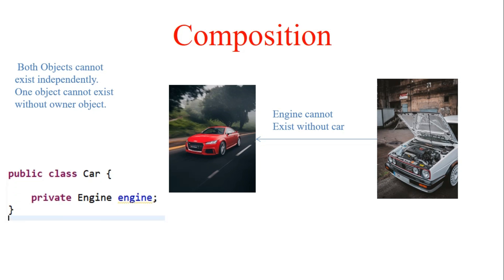The Java code snippet for composition is similar — you have a Car class and an Engine class — but logically and technically, an engine cannot exist without a car. That covers the theory of association, composition, and aggregation in Java. In the next video, I'll show you how to implement these concepts in Java. Please stay tuned and subscribe to this channel for more such videos. Thank you.